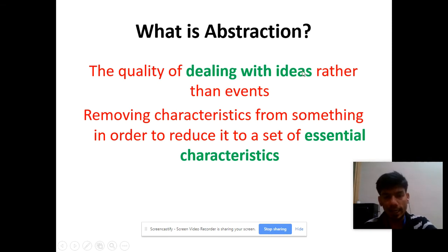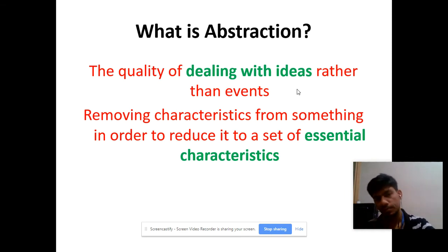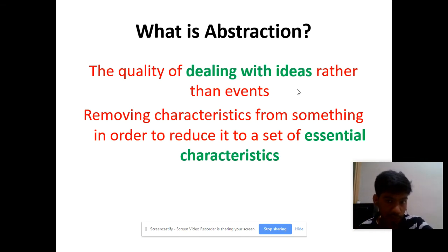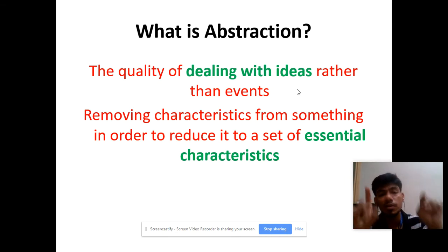Before starting, what do you mean by abstraction? I'll give the operational definition. It's a quality of dealing with ideas. Simple example: I have the habit of purchasing potatoes every day, but unfortunately I get lady's finger instead of potatoes. So why do I get lady's finger instead of potatoes? Can you tell me the different types of areas which can be seen from this example?